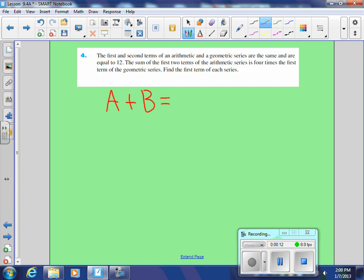of an arithmetic series and A plus B of a geometric series are equal to 12. So here's my arithmetic, here's my geometric. I thought that was a little hard to interpret, but I get it now.